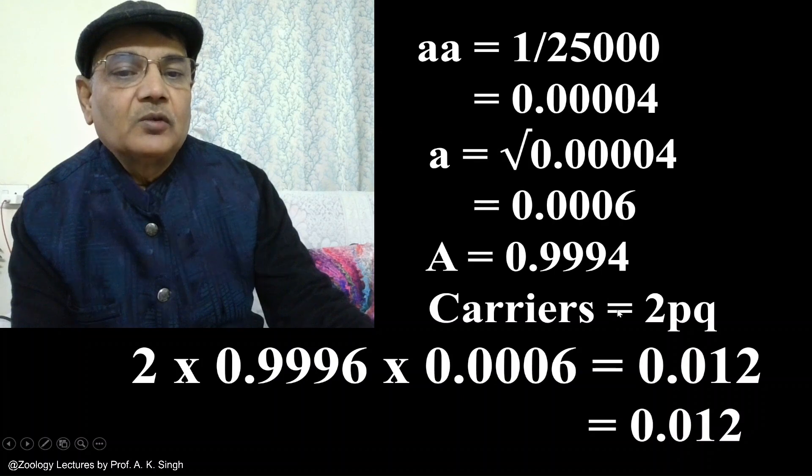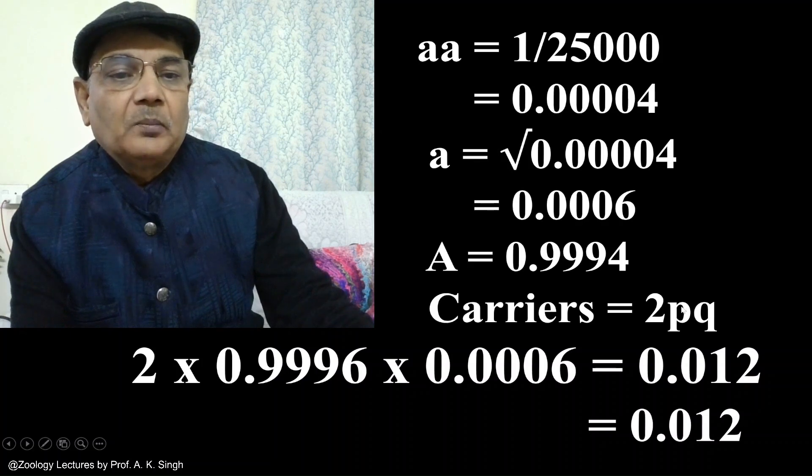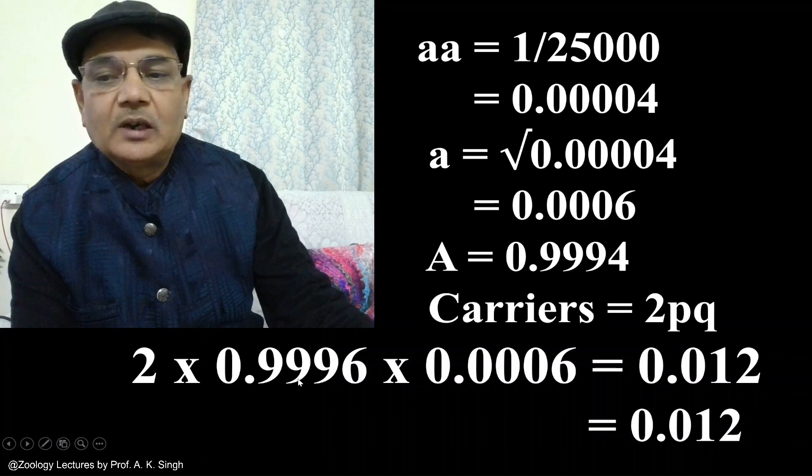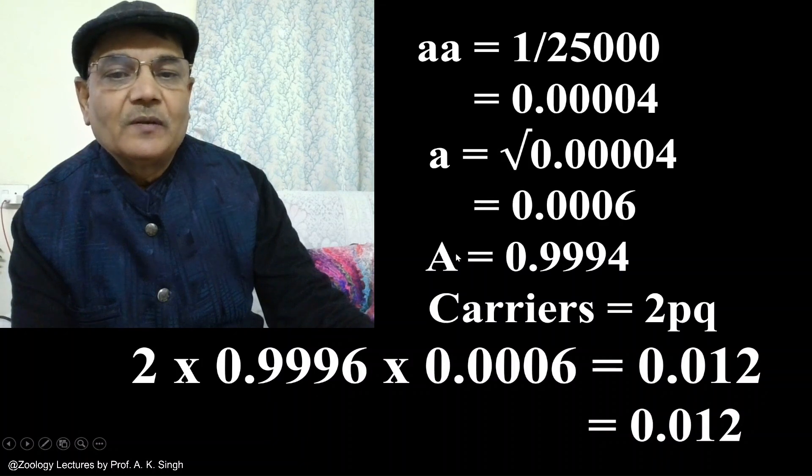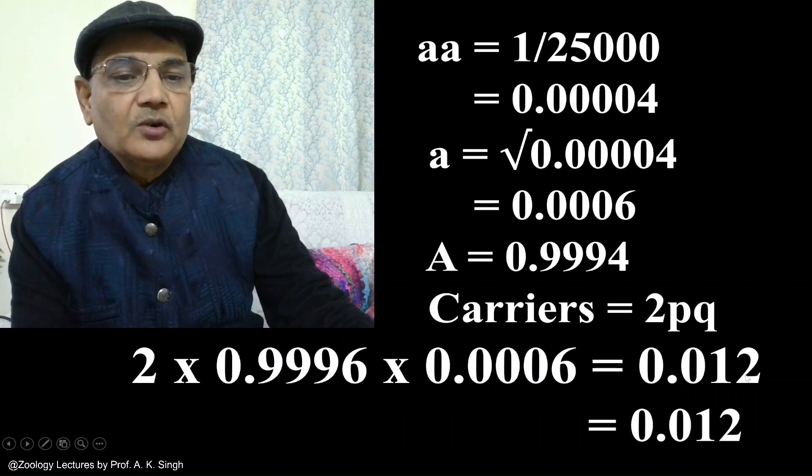To know the frequency of carriers in this population, we can use the Hardy-Weinberg equilibrium. Heterozygotes are represented as 2pq. So p stands for the normal allele and q stands for the frequency of the recessive allele. This will be calculated as 2 into 0.9996 into 0.0006, which comes to 0.012.